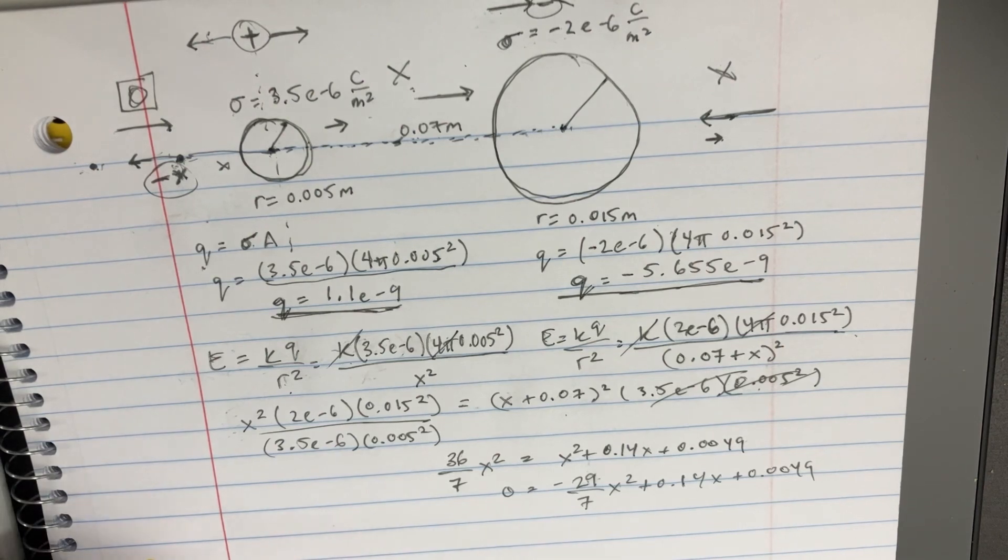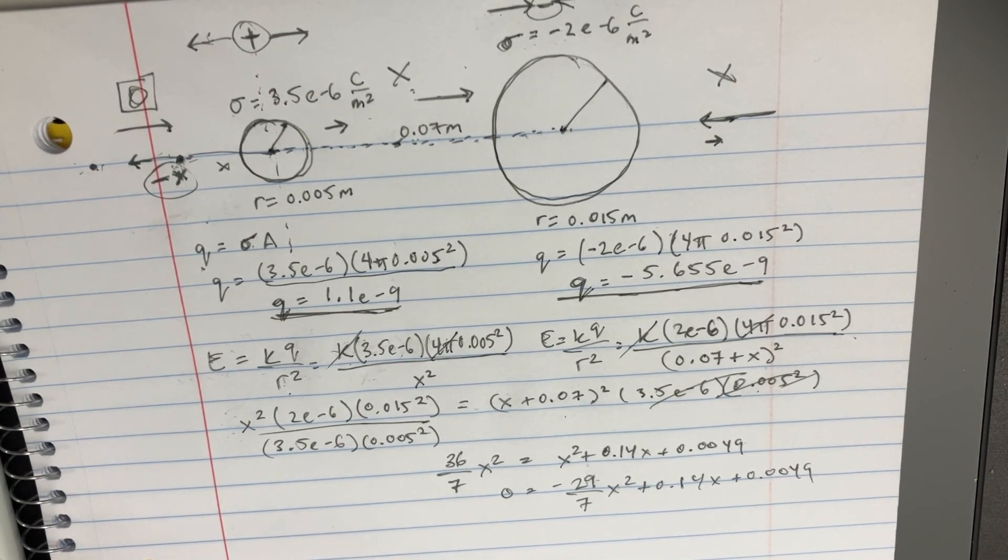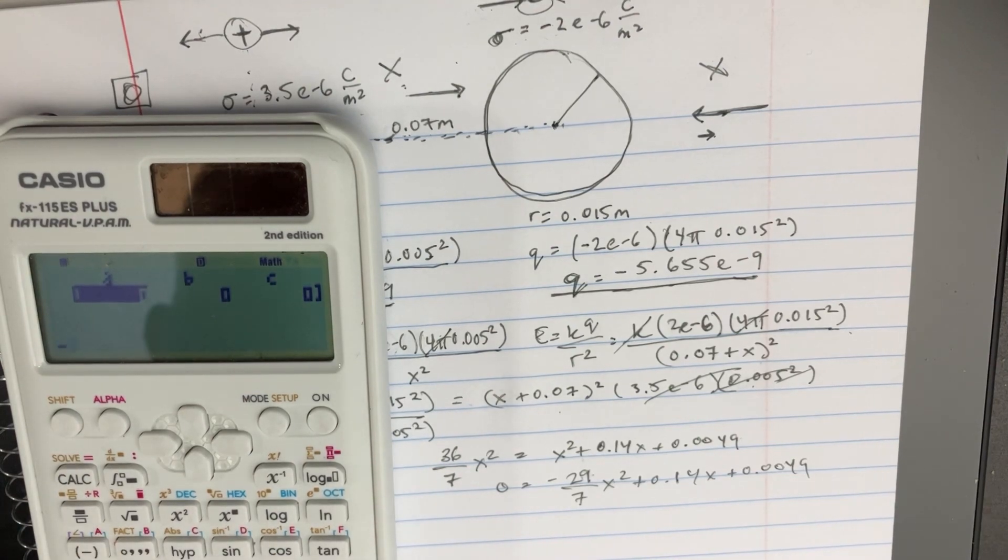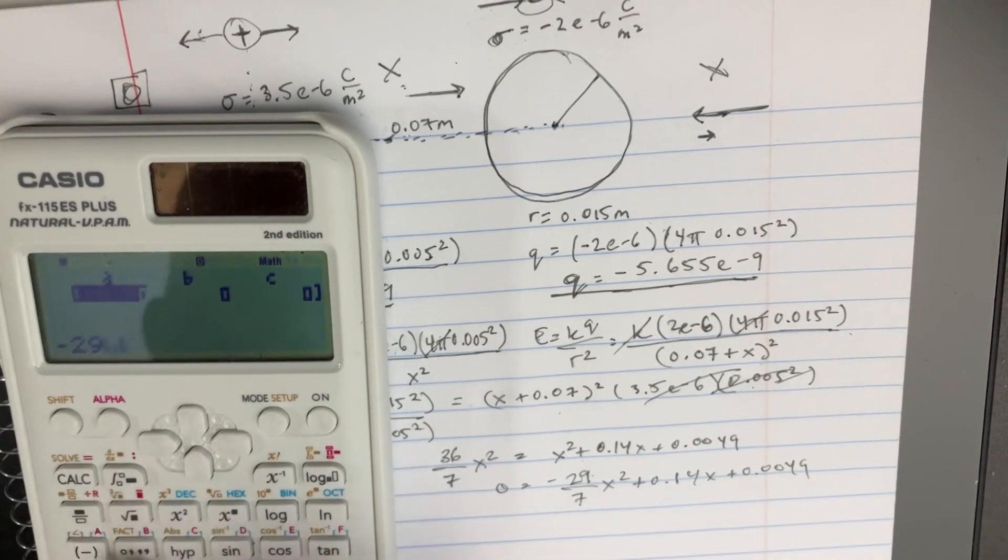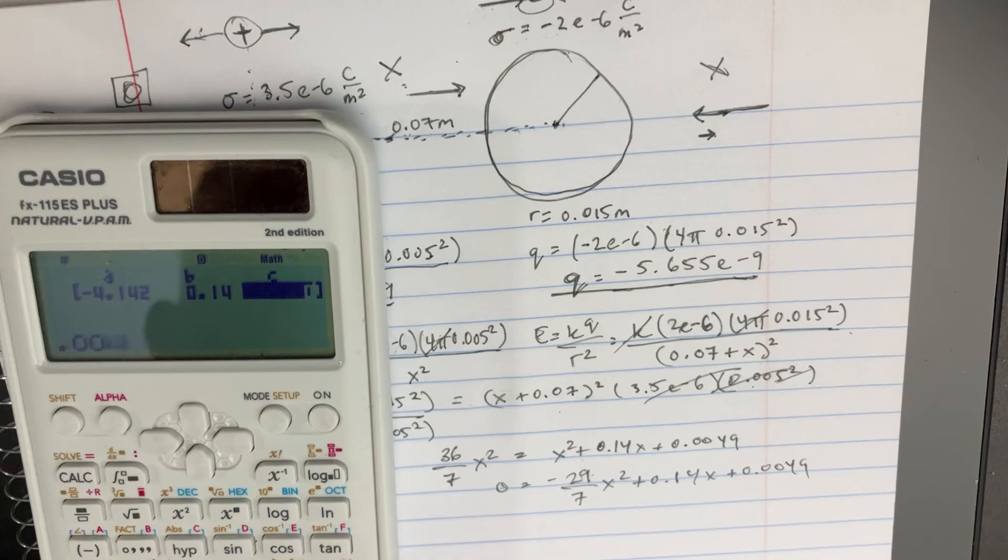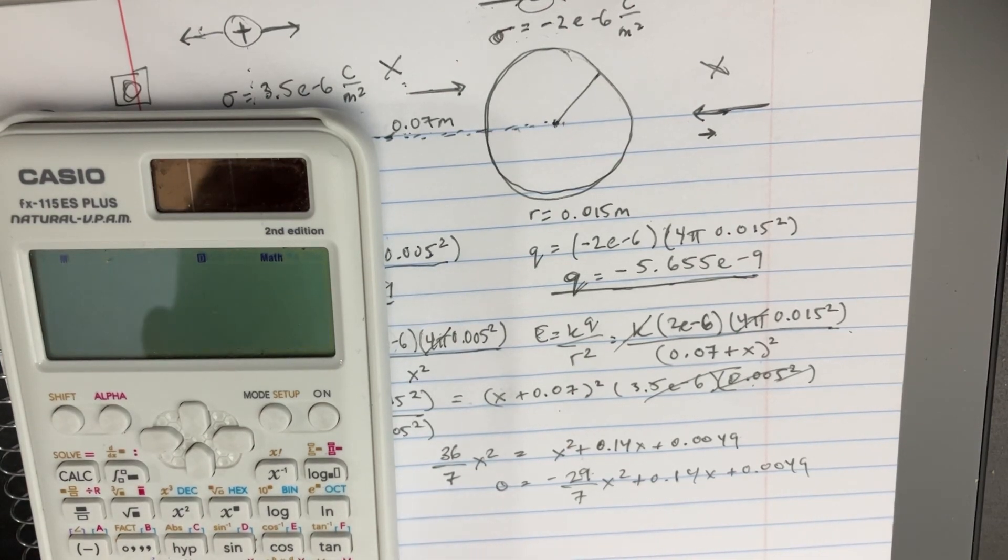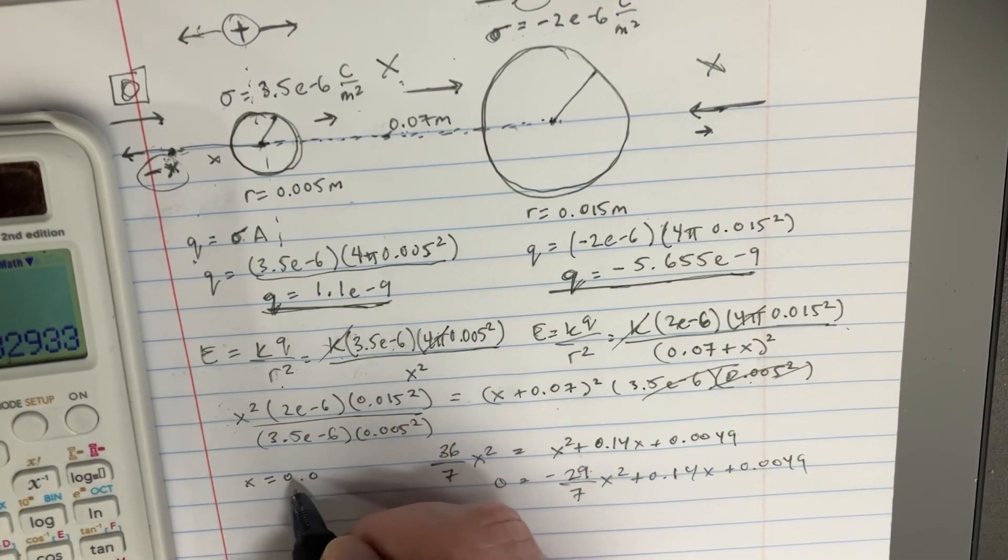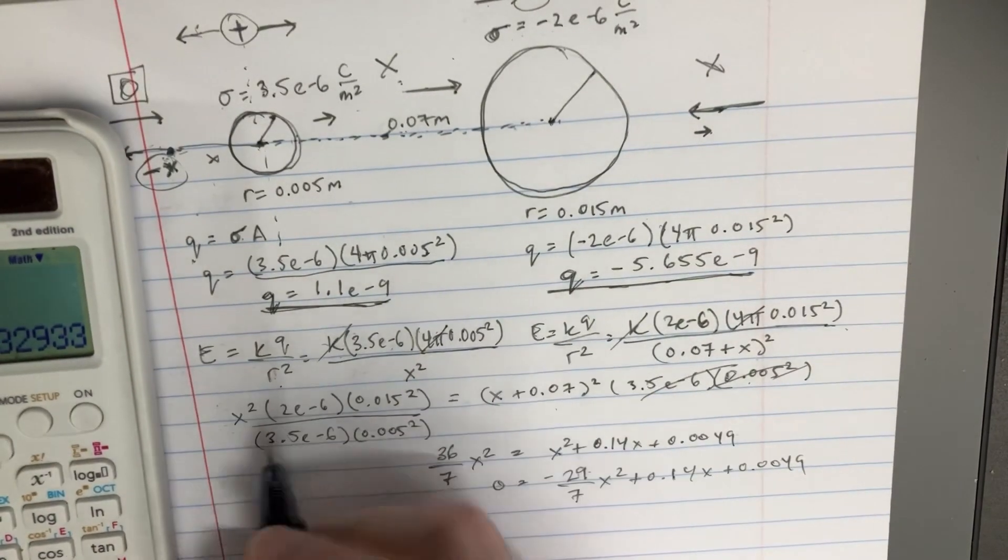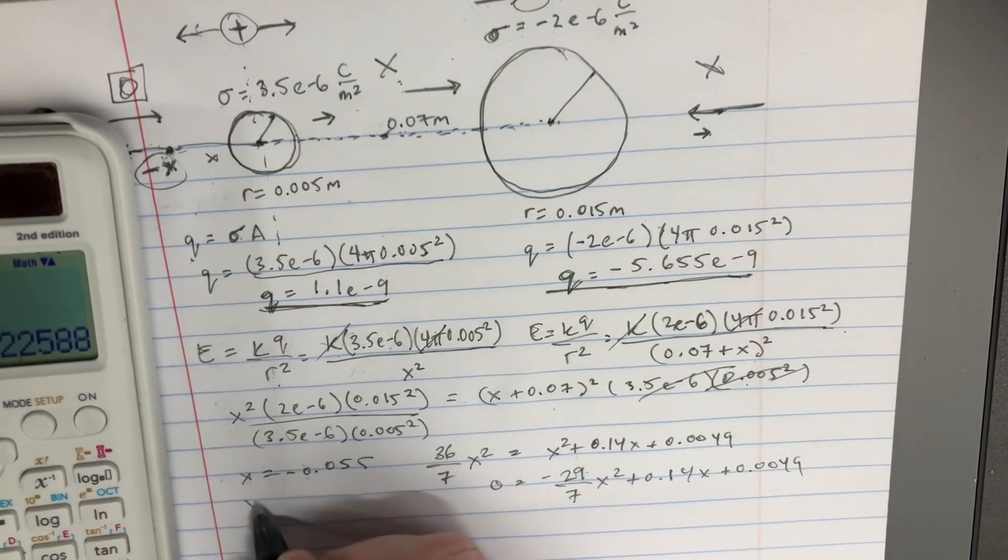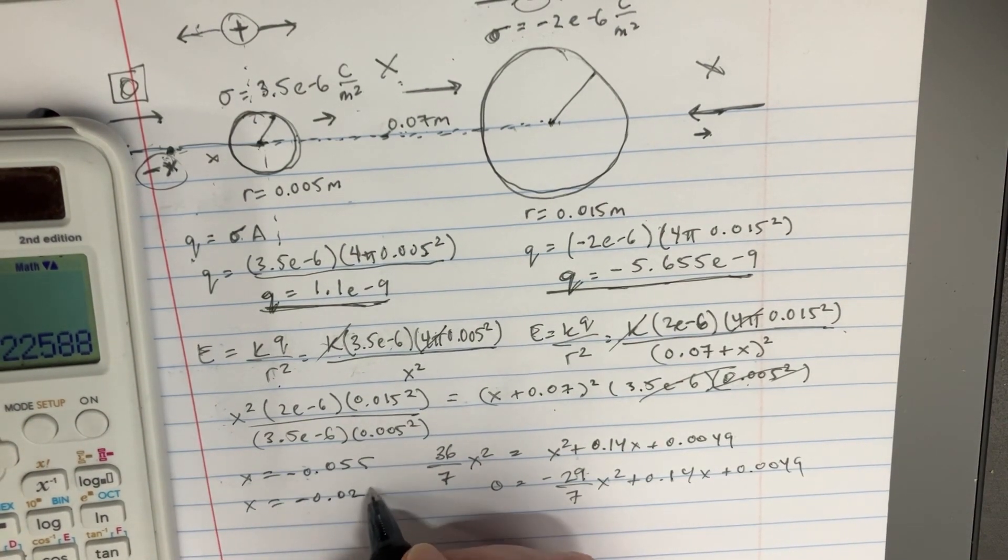Now, let's see what our calculator gives us as far as answers. We'll use the little formula thing we have here for the equation. Okay, so we get some answers. Now, I'm going to put this in both of them as negatives. I'm going to test both of them. So, x equals negative 0.055, and then the other one is negative 0.0214. So, I'm going to try both of these numbers.